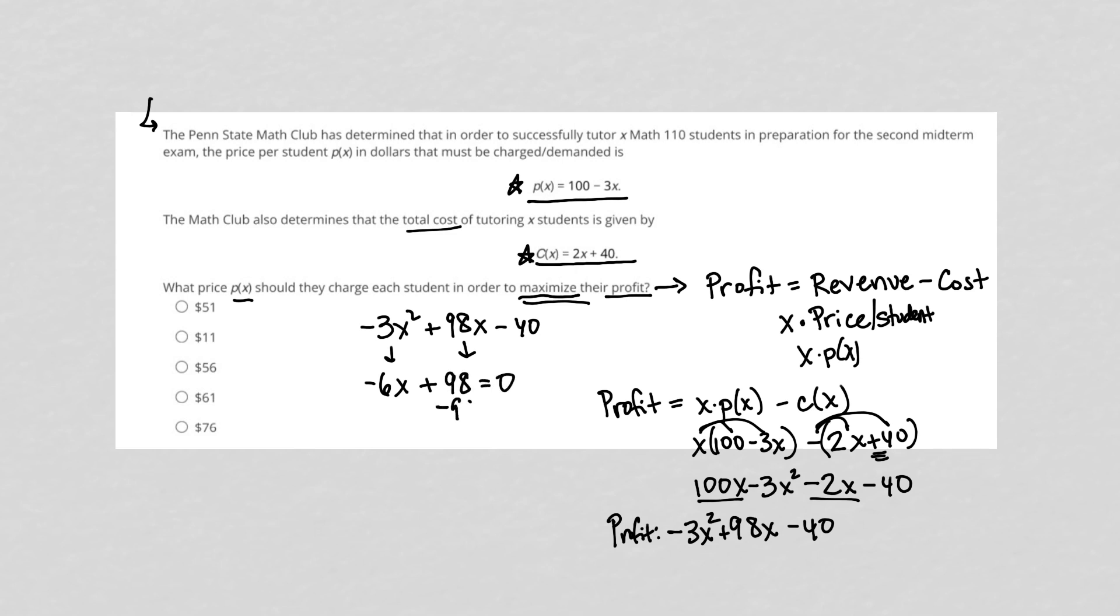I can subtract 98 from both sides. And I get negative 6X equals negative 98. I divide both sides by negative 6. And I get X equals, so 6 doesn't go into 98 evenly. Instead of using a decimal, I'm just going to reduce this fraction. 2 goes into 98 49 times. First of all, negative divided by negative is a positive. So let's get that straight and out of the way.